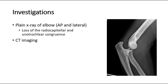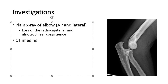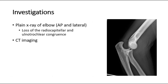For investigations, any patients presenting with significant trauma should be resuscitated, investigated, and managed as per ATLS protocols. For otherwise stable patients, plain film radiographs of the elbow, both AP and lateral, are required initially. Elbow dislocations can be identified from the loss of the radiocapitellar and ulnotrochlear congruence. CT imaging is only really useful as an adjunct in cases with associated fractures.